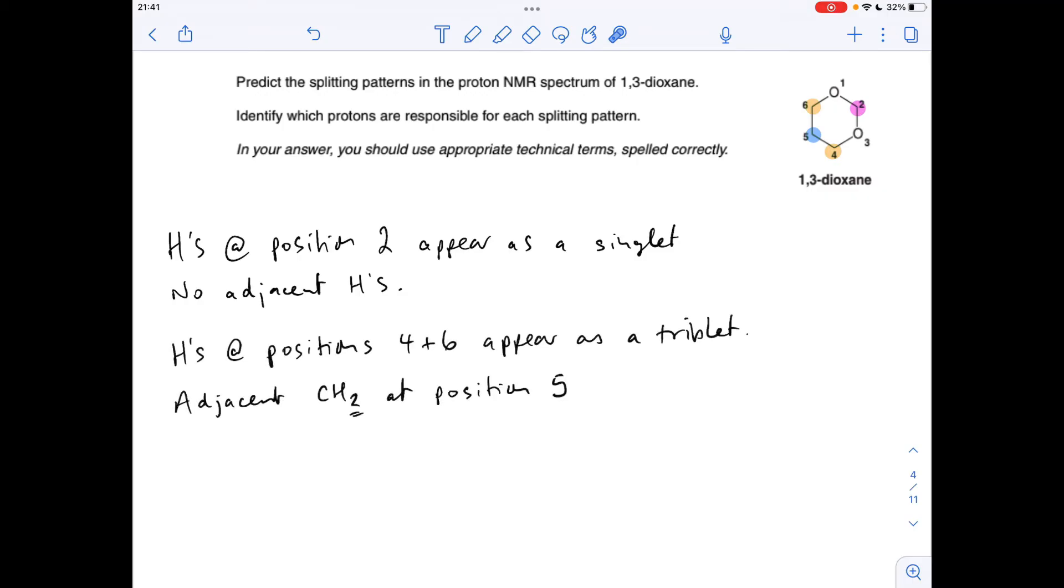So moving on to the hydrogens at position 5. The signal for those hydrogens is going to be split by these two equivalent CH2 groups. So applying the N plus 1 rule, we've got four adjacent hydrogens. So 4 plus 1 is 5. So we get a quintet or a pentet. You could even say a multiplet, but I would try and get the number into the name of the signal if you can.